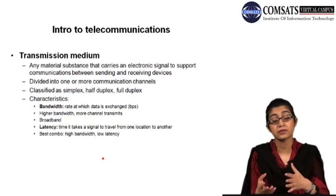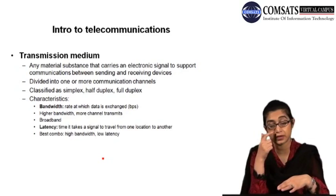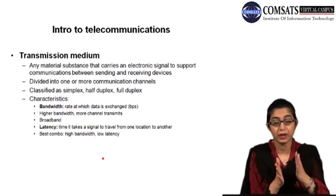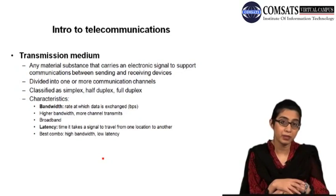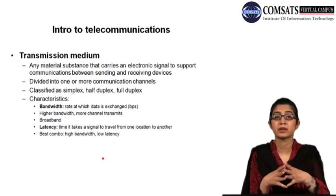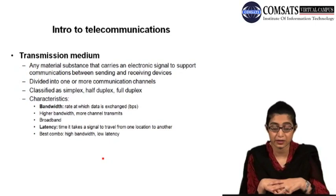Simplex means that communication happens only in one direction — only one end can transmit and the other end is the receiving end. Half duplex means that both ends can transmit and receive, but one at a time, not simultaneously. Full duplex transmission means that both ends can send and receive simultaneously. So the channels can be divided into these three categories.